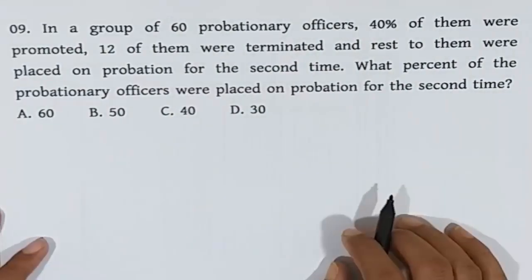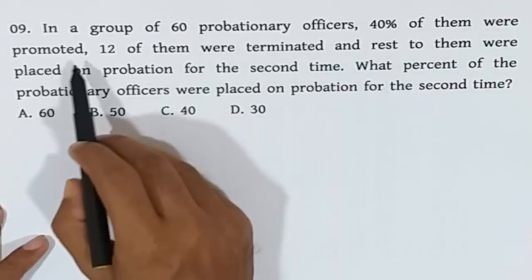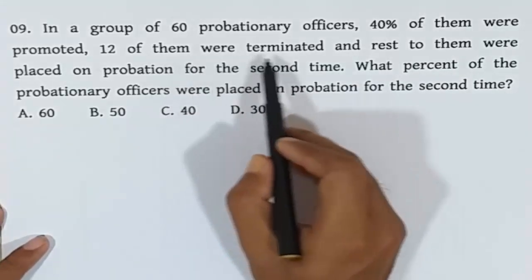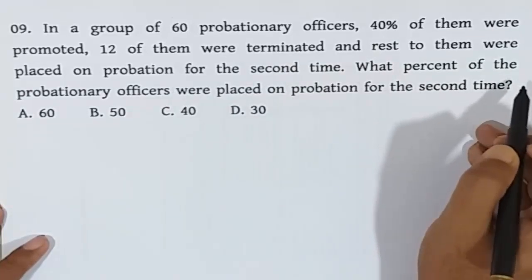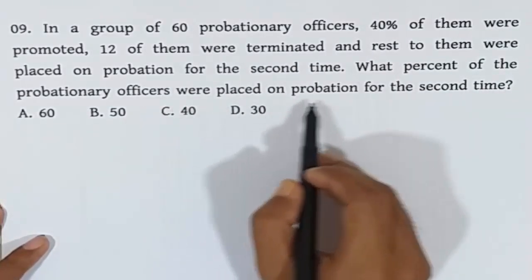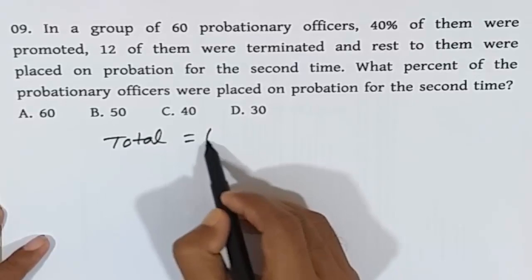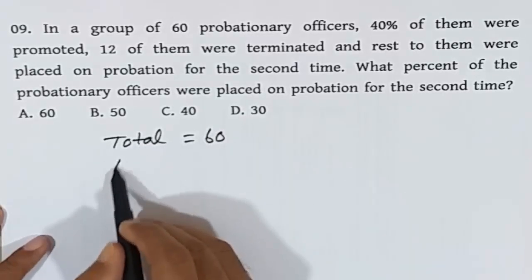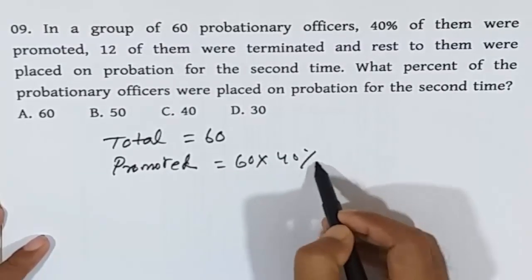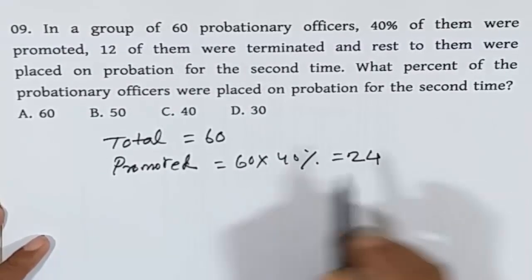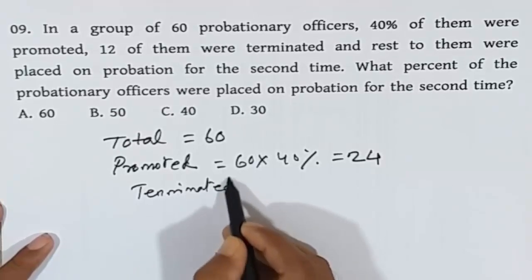Question 9. In a group of 60 Provisionary Officers, 40% of them were promoted, 12 of them were terminated, and the rest were placed on Probation for the second time. What percent of the Provisionary Officers were placed on Probation for the second time? Total Provisionary Officers: 60. 40% were promoted: 60 × 40% = 24. Terminated: 12.